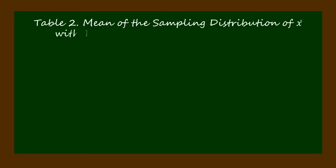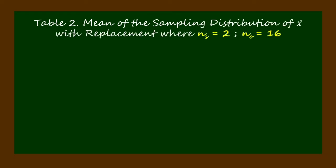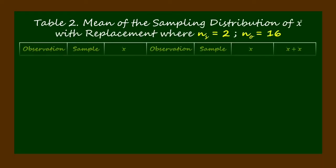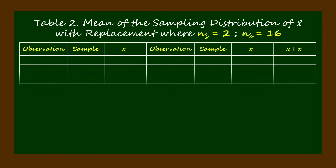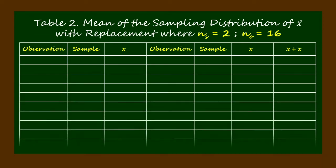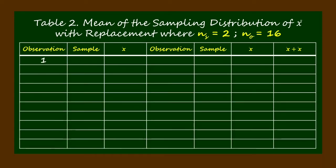Now let's construct Table 2, the mean of the sampling distribution of means, using 1, 2, 5, and 8 with replacement, where the sample size is 2 and the number of observations is 16.